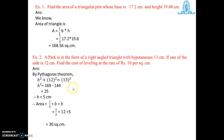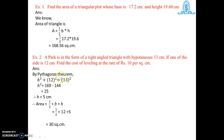Example two: a park is in the form of a right-angled triangle with hypotenuse 13 cm. If one of the sides is 12 cm, find the cost of leveling at the rate of rupees 10 per square centimeter. First, we find the area. Since base and height are needed but only one side and the hypotenuse are given, we use the Pythagoras theorem: hypotenuse squared equals the sum of the remaining sides squared. So x squared plus 12 squared equals 13 squared.